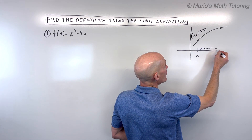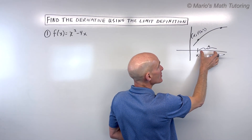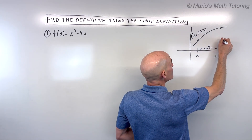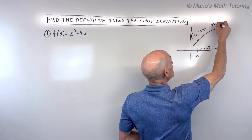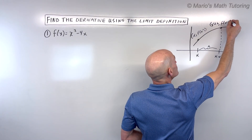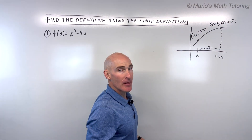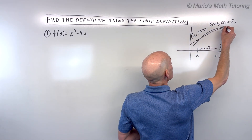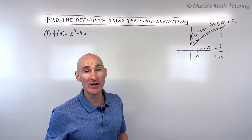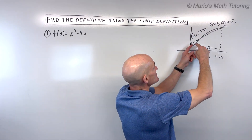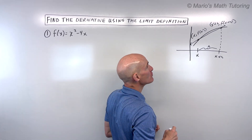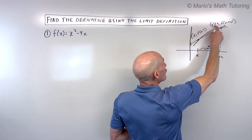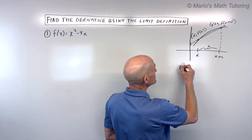Now, if you go a little bit further to the right — let's say this is an arbitrary distance of h — this is going to be x plus h. When you go up to that point on your curve and put it into your function, you're going to get the corresponding y value, which is f of x plus h. Now we're going to find the slope between these two points. The slope is sometimes referred to as the average rate of change, and this is basically like a secant line — it cuts through the graph at two points. Remember your slope formula: it's y2 minus y1 over x2 minus x1, which you learned in algebra.